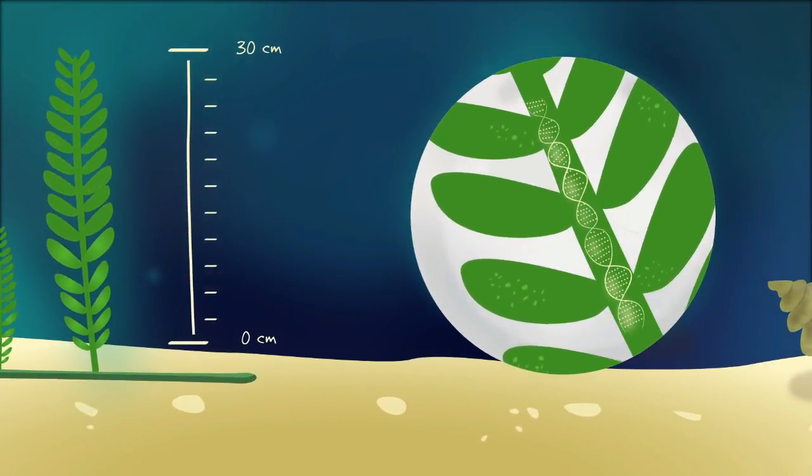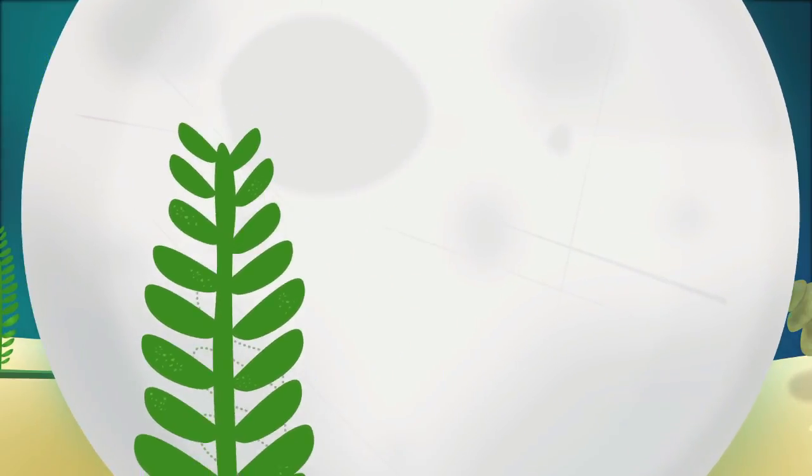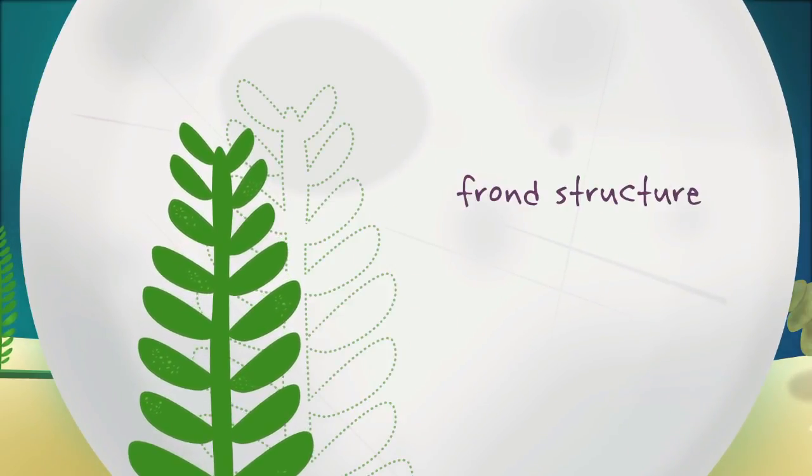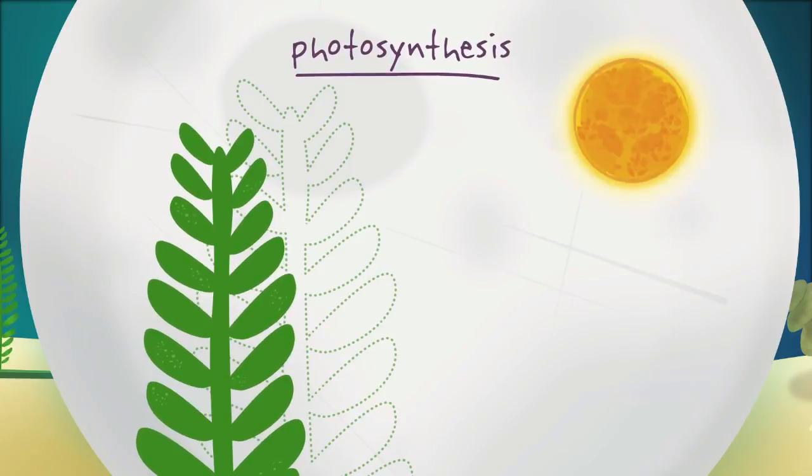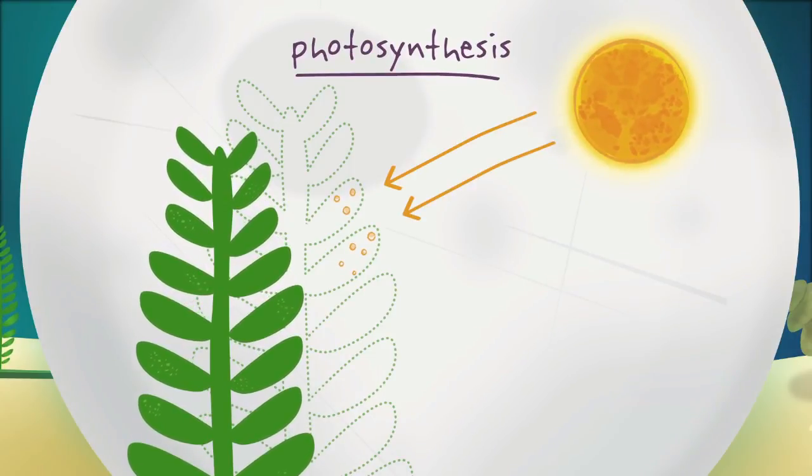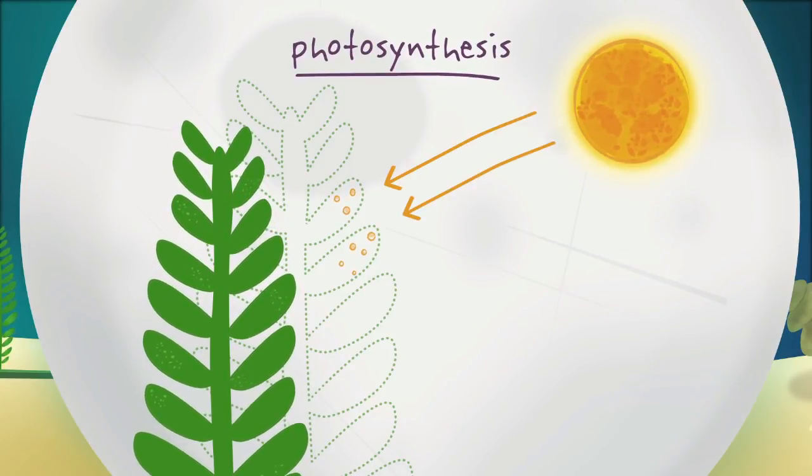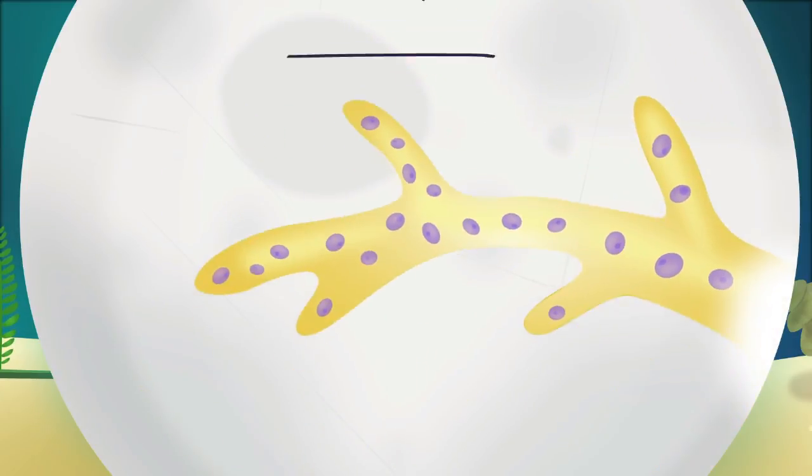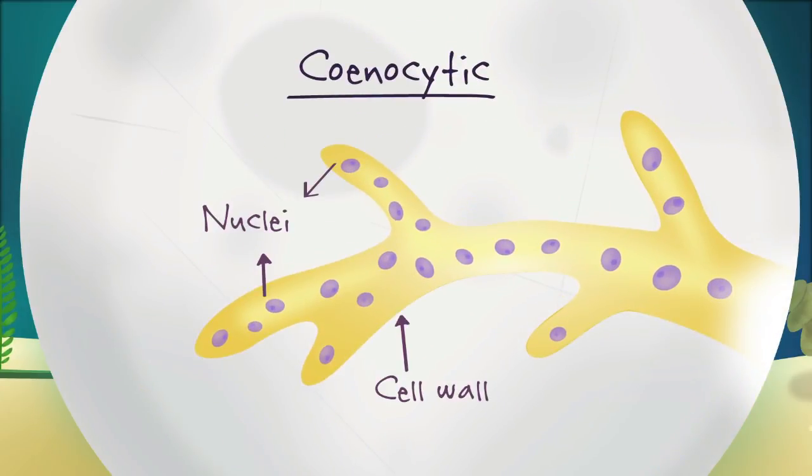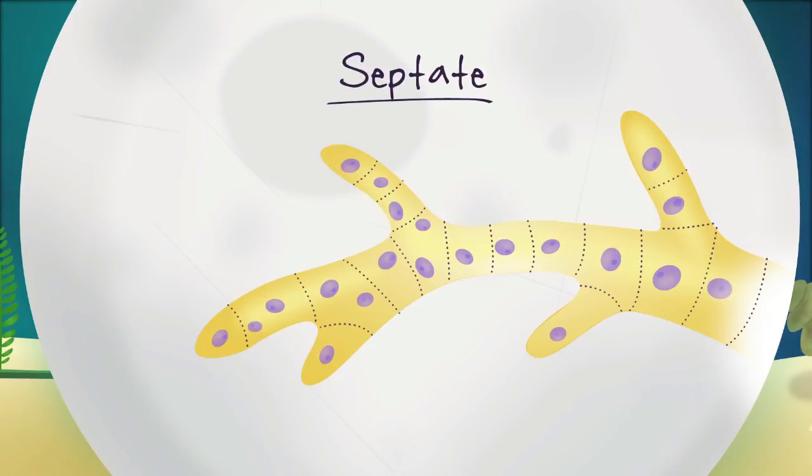Its surface area is enhanced with a frond-like structure. It uses photosynthesis to assemble its own food molecules. And it's coenocytic. That means it's a single cell with multiple nuclei, making it like a multicellular organism, but without the divisions between cells.